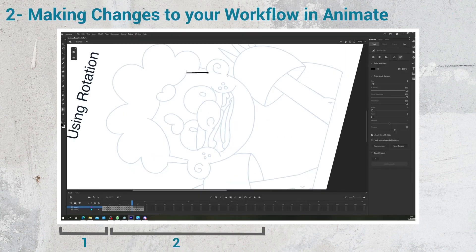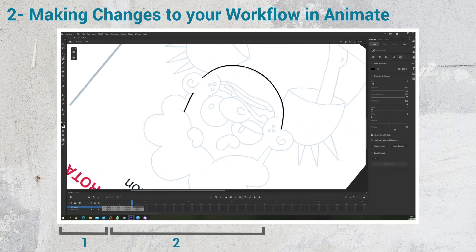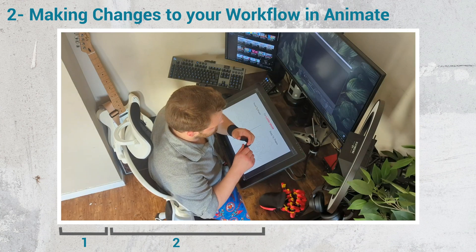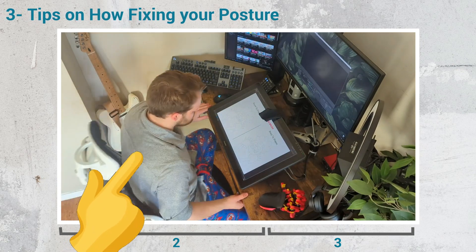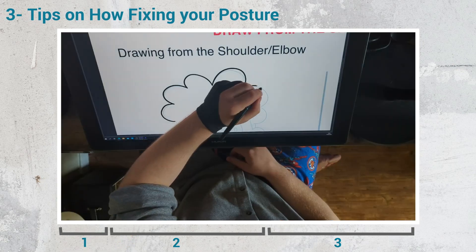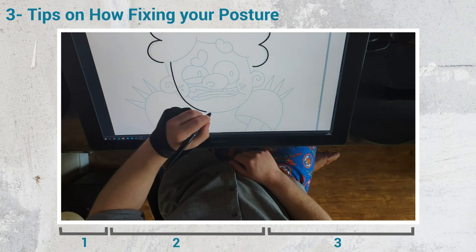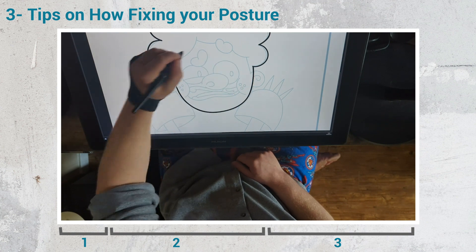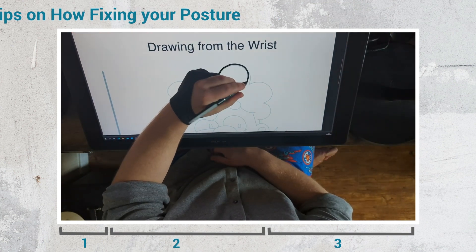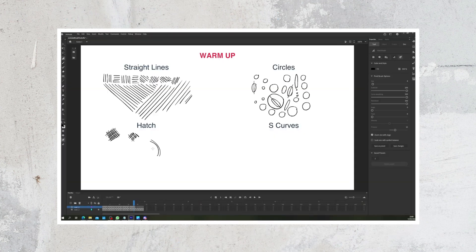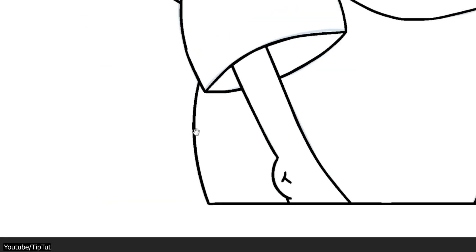The second category is all about making changes to your workflow in Animate. And lastly, TipTut gives you — yes, you specifically, the animator — tips on how fixing your posture, for instance, can have a tremendous impact on the way your line work looks, coupled with other really helpful and well-explained tips. As usual, TipTut's tutorial is nothing short of excellent.